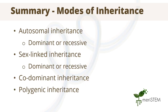In summary, we covered how genetic factors can be inherited from one generation to the next. We discussed four different modes of inheritance: autosomal inheritance, which can be dominant or recessive; sex-linked inheritance, which can also be due to a dominant or recessive allele; co-dominant inheritance; and polygenic inheritance.